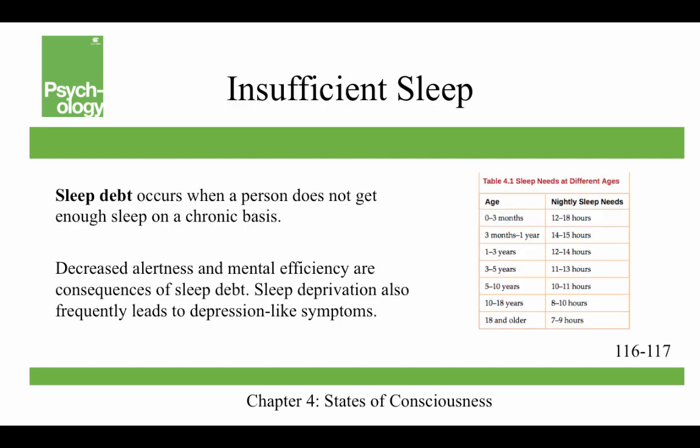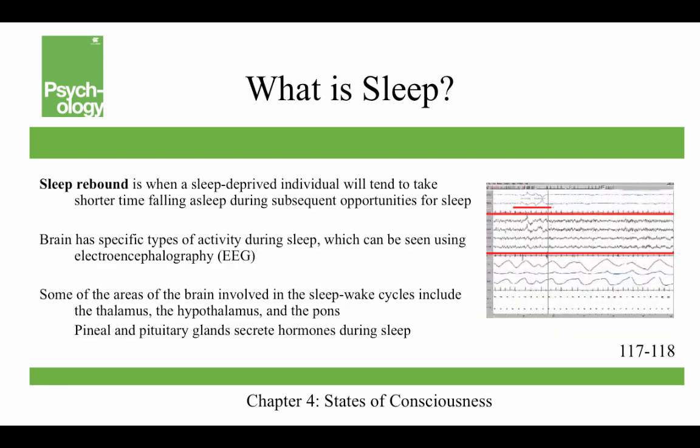Sleep debt occurs when a person does not get enough sleep on a chronic basis. Decreased alertness and mental efficiency are consequences of sleep debt, and sleep deprivation also frequently leads to depression-like symptoms and is associated with obesity, increased blood pressure, increased stress, and a reduced immune response. At age 18 and older you should be getting seven to nine hours of sleep. Sleep rebound is when a sleep-deprived individual will tend to fall asleep more quickly during subsequent sleep opportunities, and this is evidence of the homeostatic function of sleep.